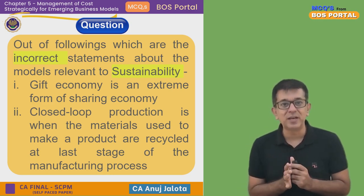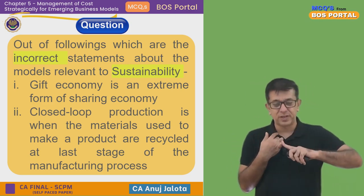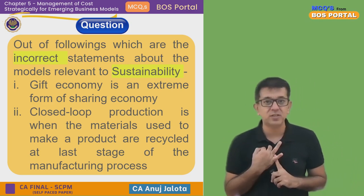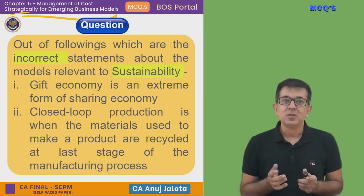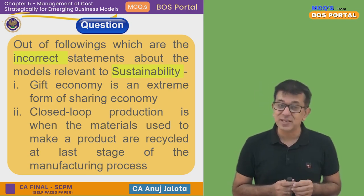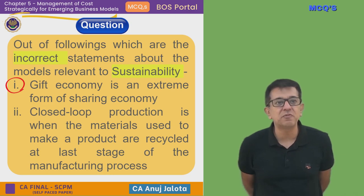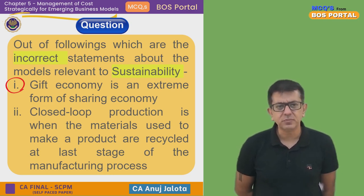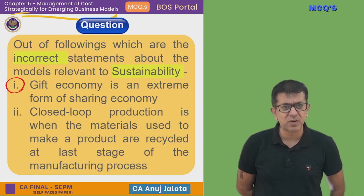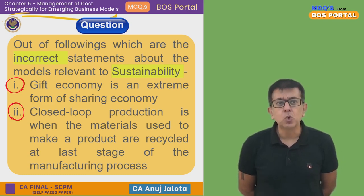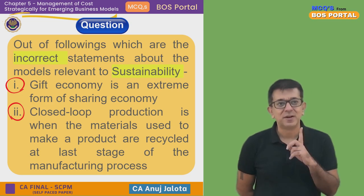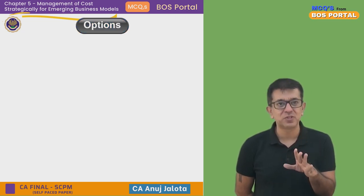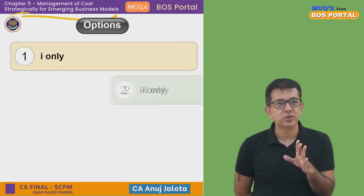Sustainability means you should be profitable, discharge your responsibilities towards society, and also towards this mother earth. Now, which of the following statements is correct? Statement one: gift economy is an extreme form of sharing economy. Statement two: closed loop production is when materials used to make a product are recycled at the last stage of the manufacturing process. The options are: one only, two only, both one and two, or none of one and two.